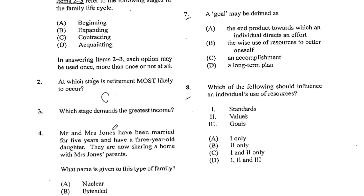So if we recall, the question indicated that some of these answers in items 2 to 3 would be used either once, more than once, or not at all. You would not have used A, the beginning stage, and D, the acquainting stage — none of them were used more than once. So number 2 would be C, contracting, and number 3 would be B, expanding.